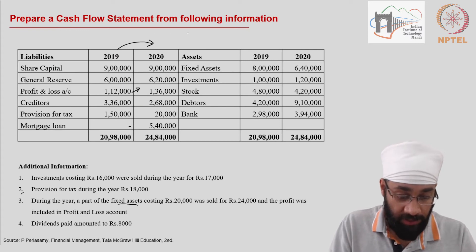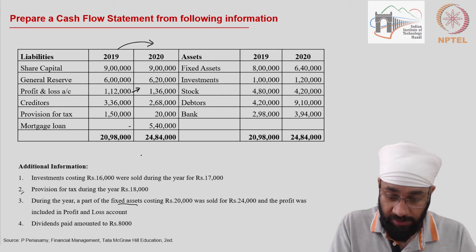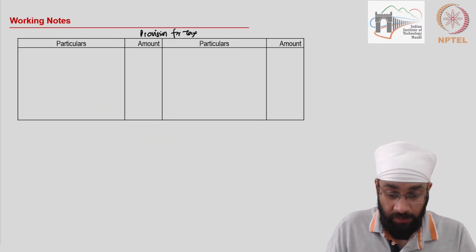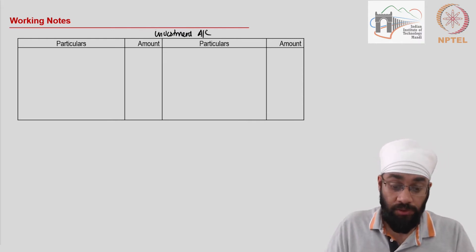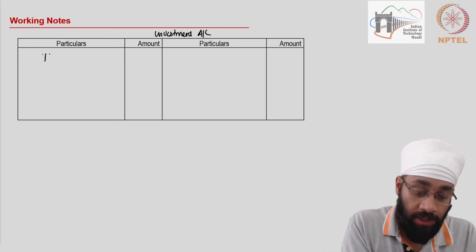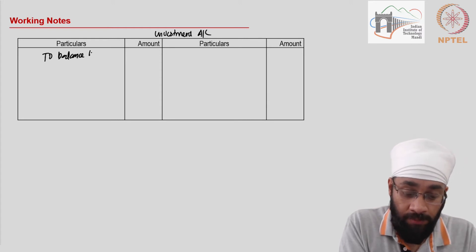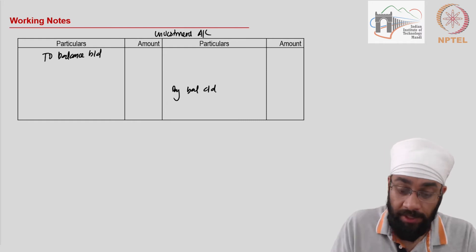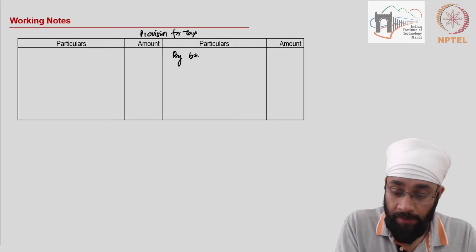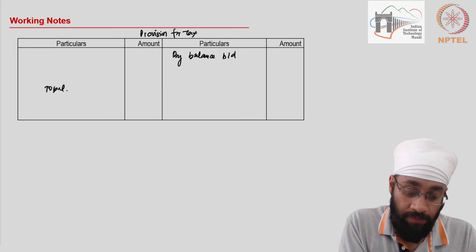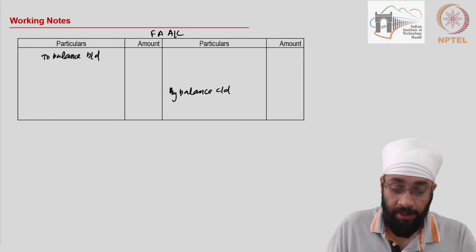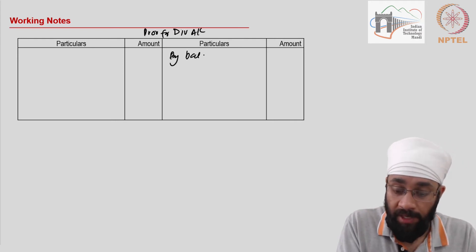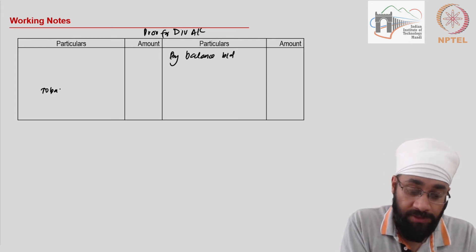And there is one last item which is dividend paid. However, there is no balance in the dividend account. So regardless, we are going to prepare a provision for dividend account. Now I'm going to bring the balances to all these four accounts. The investment account will have an opening balance on the debit side and a closing balance by balance carried down. Likewise, provision for tax will start by balance brought down and go to balance carried down. The fixed asset will start on the debit side by balance brought down and by balance carried down. Provision for dividend will start on the credit side by balance brought down and go to balance carried down.